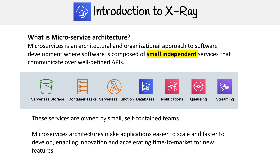The idea is that you have all these isolated services — your source storage, and instead of using large EC2s to handle all the functionality of your application, you break it up into containers or serverless functions. Then you have your databases, notifications, queuing, and streaming. The combination of all these services being used together is microservice architecture. The question is: how do we keep track of or debug the communication between all these services? Because if you're using a lot of them, it can get confusing — and that's what X-Ray solves.